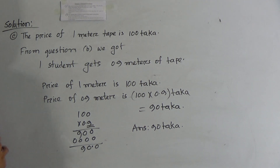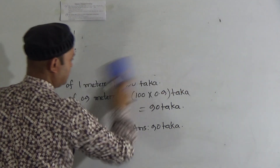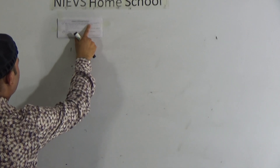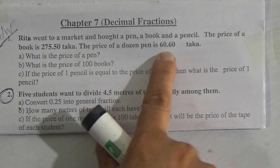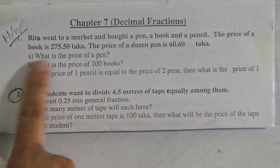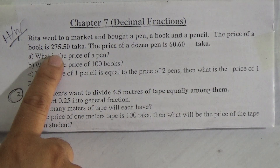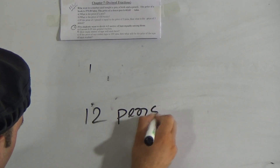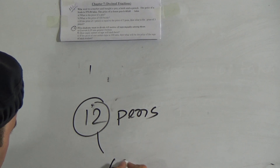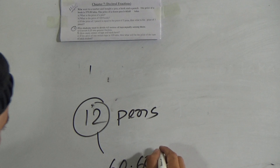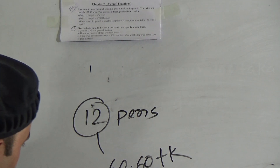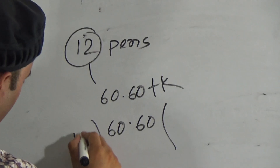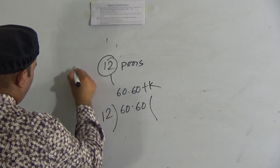My dear students, hope you understood this one. Now look at question number 1, which is your HW. Rita went to a market and bought a pen, a book, and a pencil. The price of the book is 275 taka. The price of a dozen pens is 60.60 taka. What is the price of one pen? The price of a dozen means 12 pens. Price of 12 pens is 60.60 taka. Then to find the price of one pen, we will divide 60.60 by 12 — that gives the answer to part A.